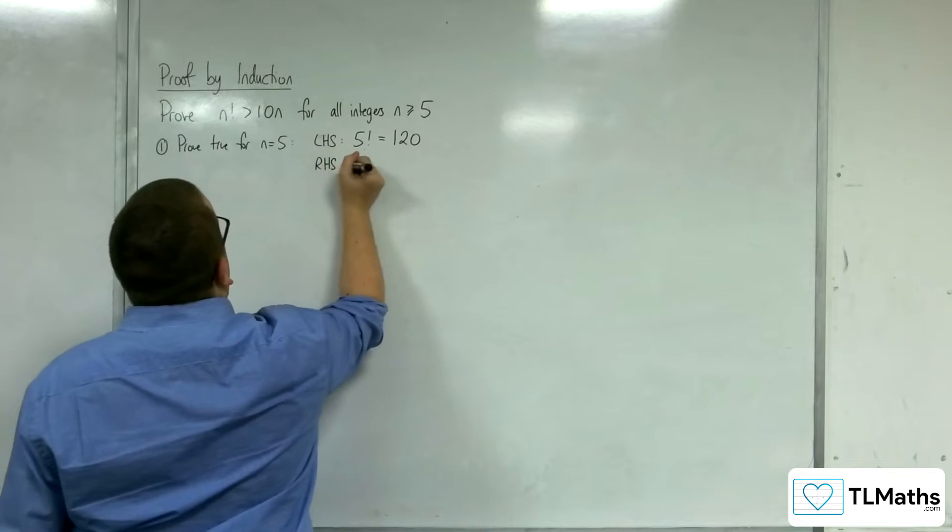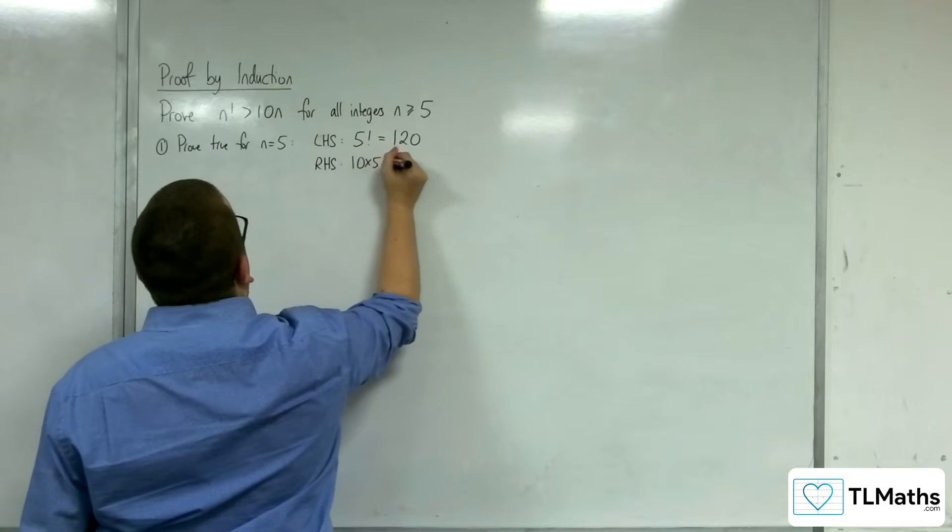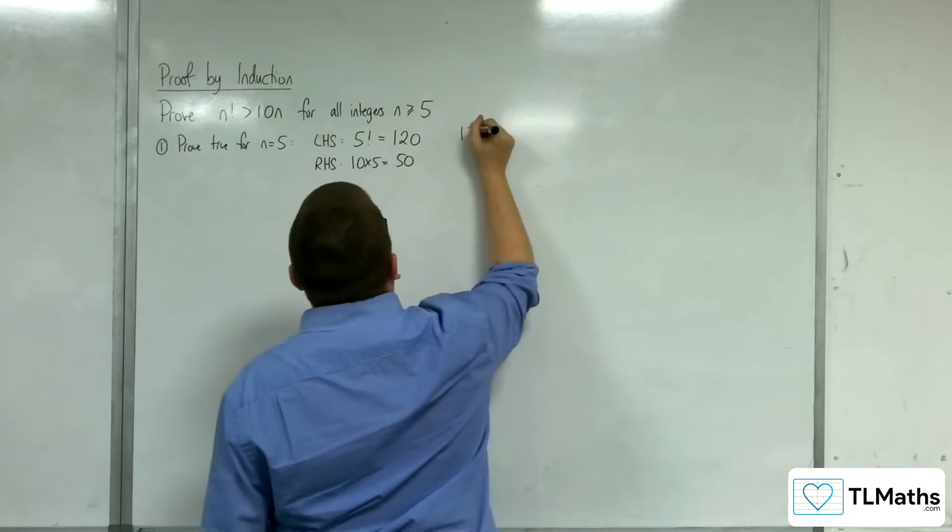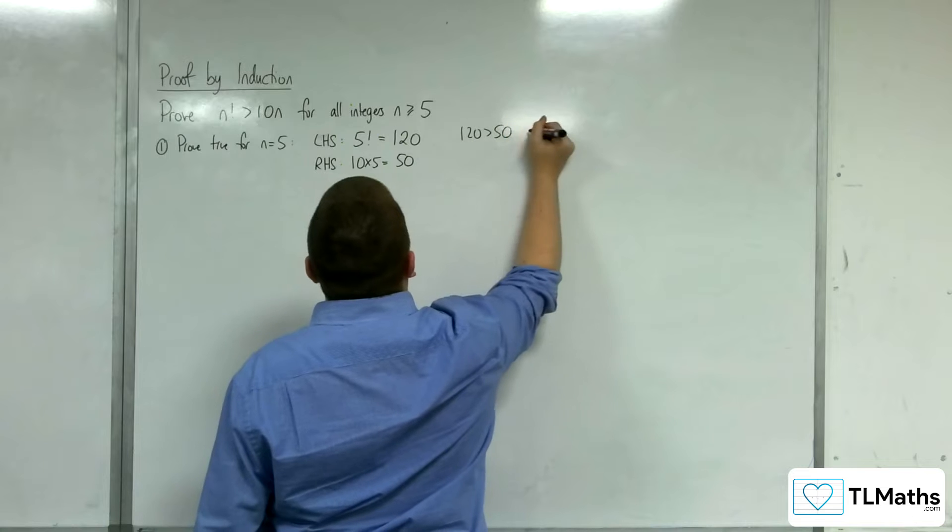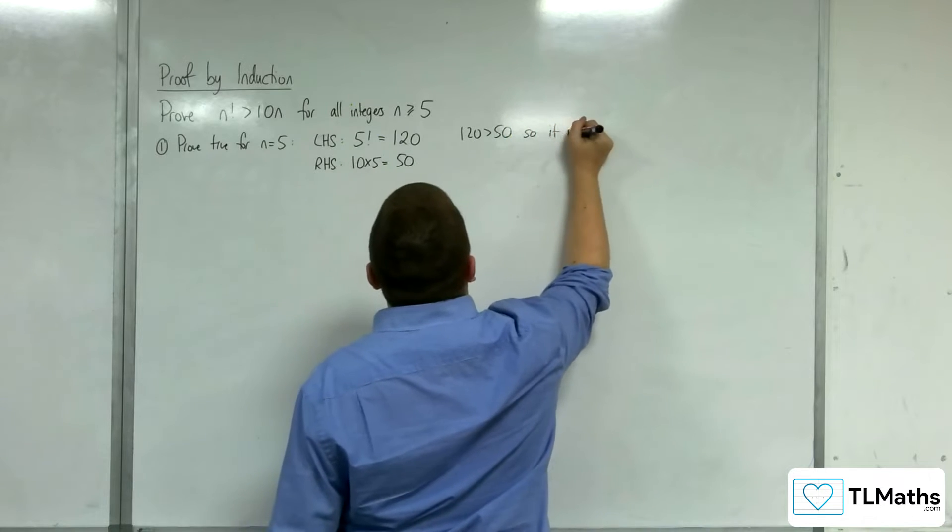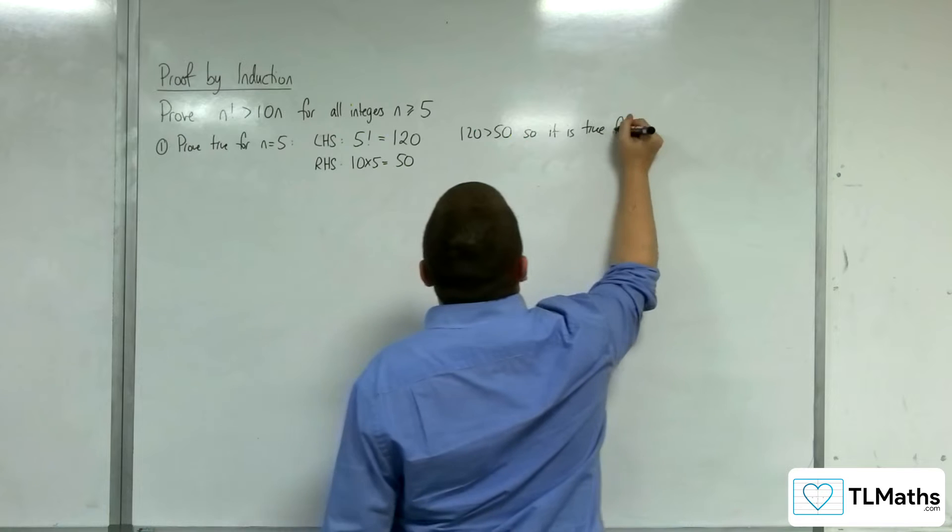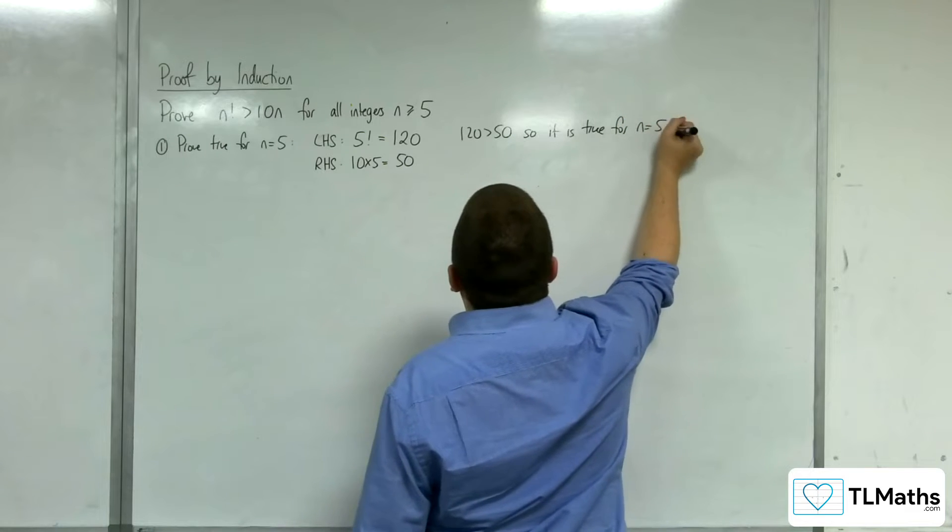The right-hand side is 10 lots of 5, which is 50. 120 is greater than 50. So, it is true. For n equals 5.